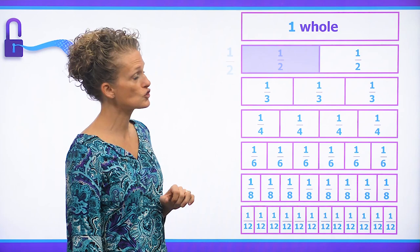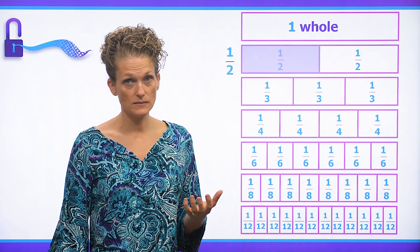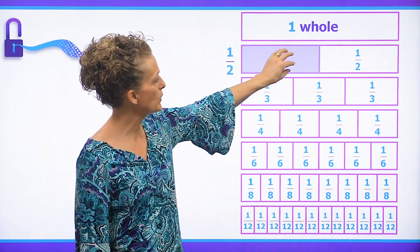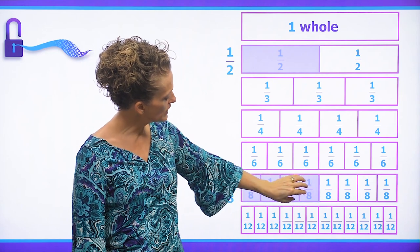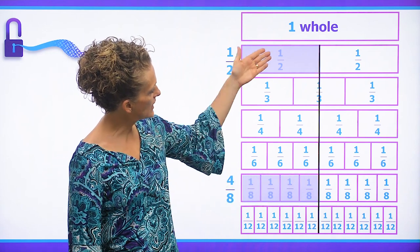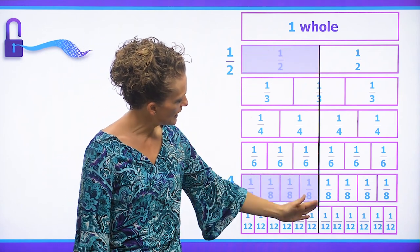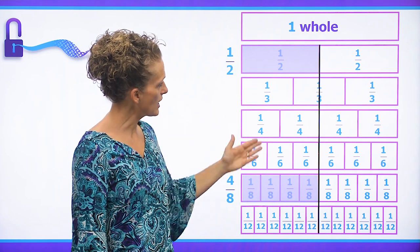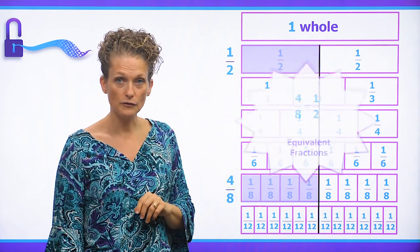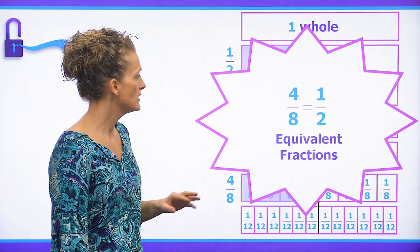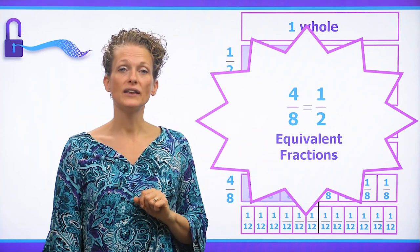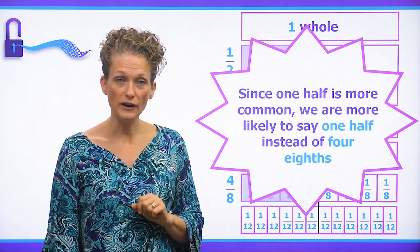If we go to our fraction strips, just to remind ourselves what that looks like, here's one half. Down here, we have four eighths, and we can see that they both line up with our line and are shading the same amount of the fraction strip. So four over eight is equal to one half, and they are equivalent fractions.